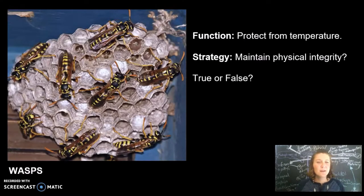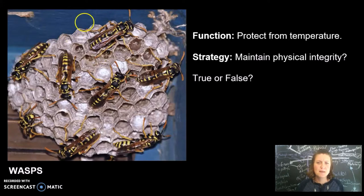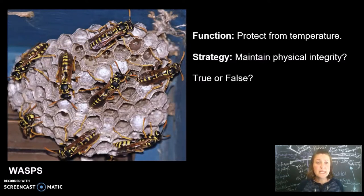Wasps. Wasps build an extra layer of outer empty combs to protect from both cold and heat. The outer layer of combs rarely has a few broods present. In a previous study done by Hozumi, in the middle of summer the nest temperature at the brood combs was below 33 degrees Celsius. Does the wasp achieve the function 'protect itself against temperatures' through using the strategy 'maintain physical integrity'? True or false?